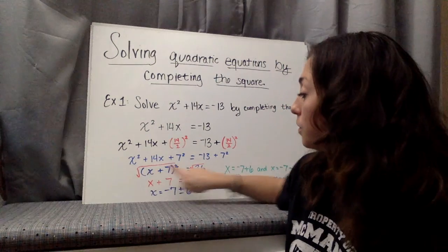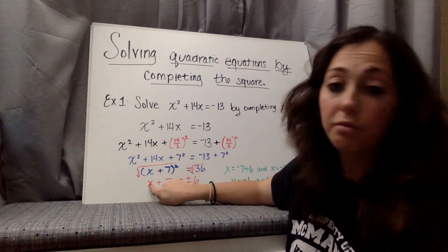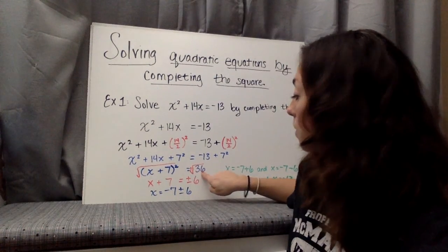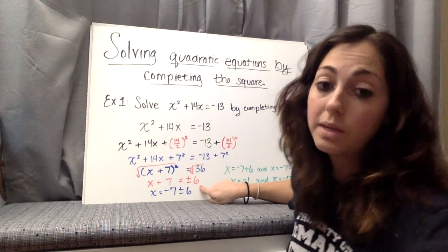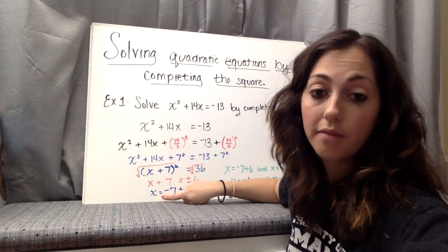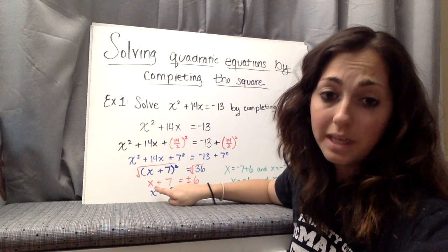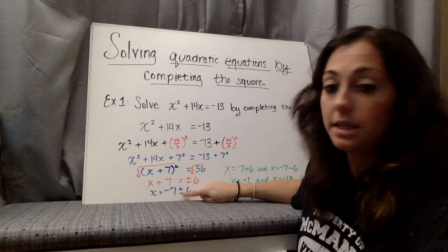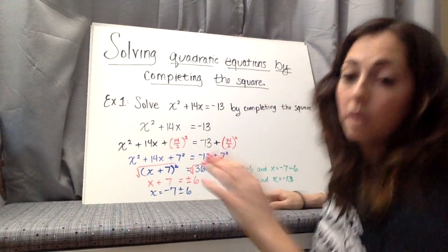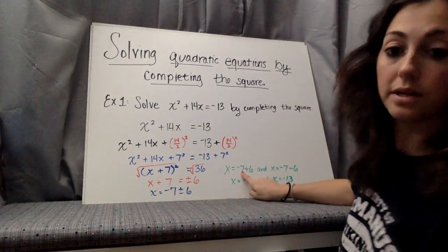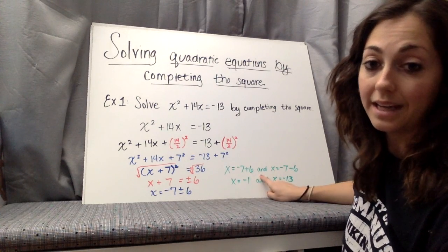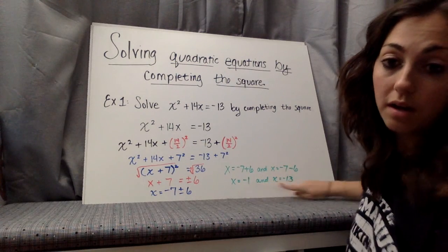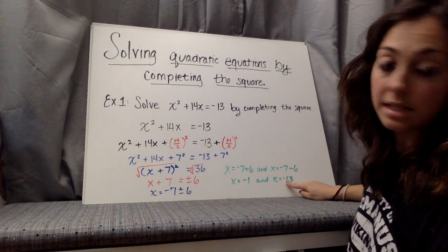When we take the square root of a square of a binomial, we're left with the binomial x plus 7. The positive and negative square root of 36 is positive and negative 6. So we have two answers. We need to get x alone, so we subtract 7 from both sides, giving us negative 7 plus or minus 6. So we have negative 7 plus 6 and negative 7 minus 6. Negative 7 plus 6 is negative 1, and negative 7 minus 6 is negative 13.